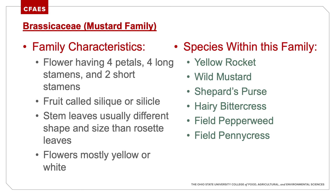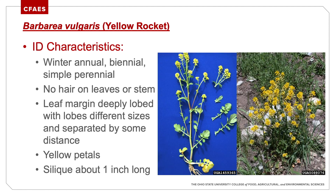Brassicaceae — the mustard family. Flowers have four petals, four long stamens and two short stamens. Fruits called siliques or silicles. Stem leaves are usually a different shape and size than rosette leaves. Flowers are mostly yellow or white. Species in this family include yellow rocket, wild mustard, shepherd's purse, hairy bittercress, field pennycress, and field pepperweed. First up: yellow rocket.